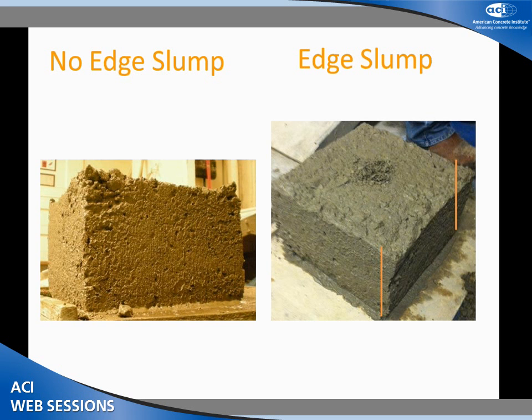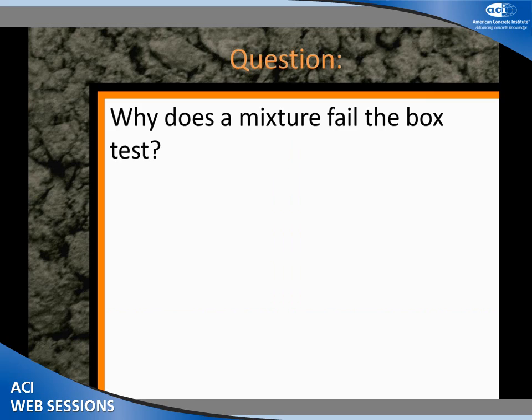We can also look at edge slumping — bottom edge slumping and top edge slumping. Here are some pictures: that's with no edge slump; you can see edge slump at the top there — that's got too much workability.